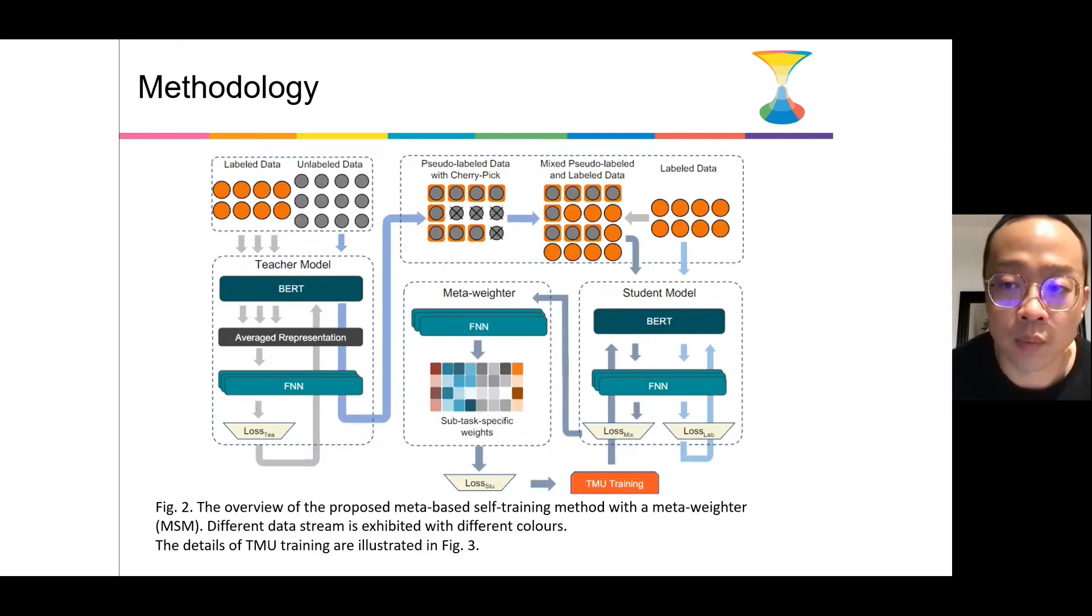This is an overview of the proposed method, which consists of three components: a teacher model, a student model, and a meta-weighter. First, we use the golden data to train the teacher model. After training in this step, the teacher model can generate some pseudo-labels for unlabeled datasets. And we combine the golden data with this pseudo-labeled data to form a large dataset, namely mixed pseudo-labeled and golden-labeled dataset, as shown in the picture, for training the student model.